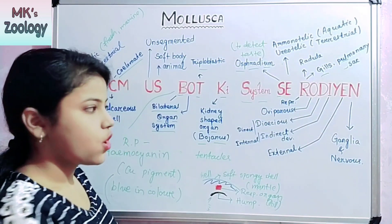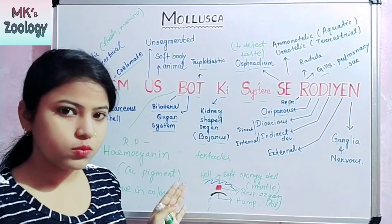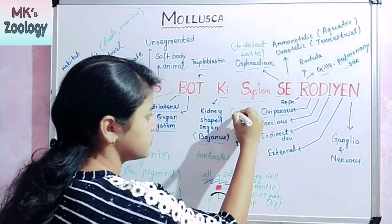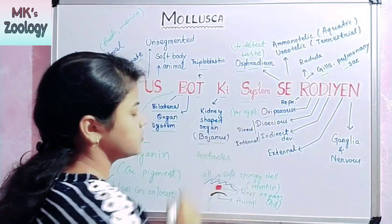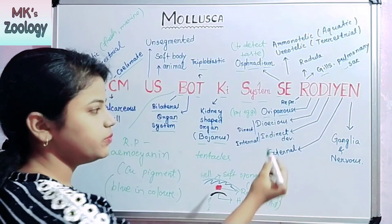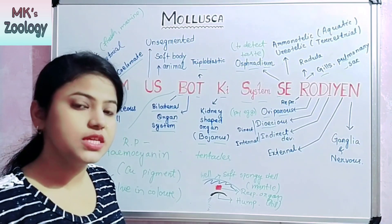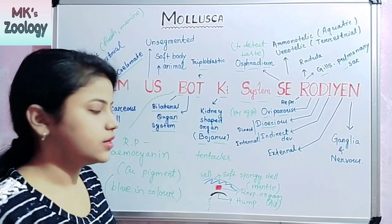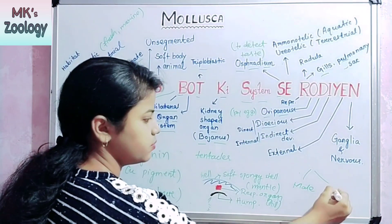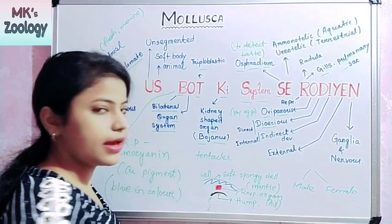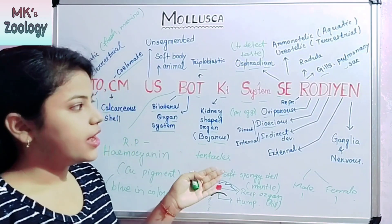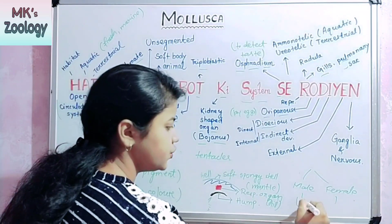O means oviparous — they lay eggs. B means dioecious — both sexes are separate, meaning male and female are separate animals. They are unisexual, so sexes are separate.